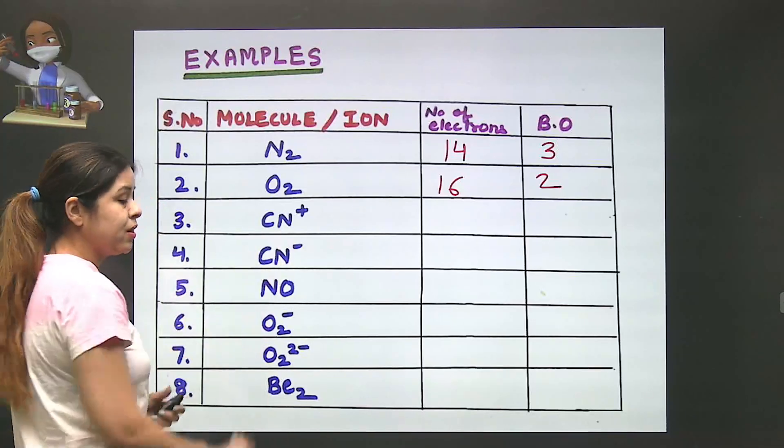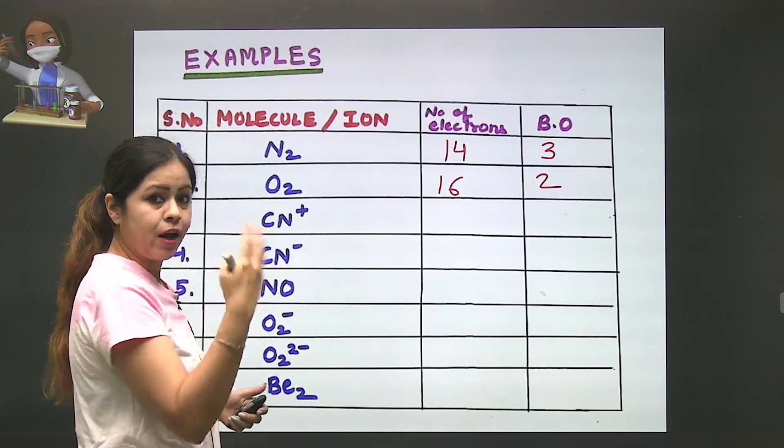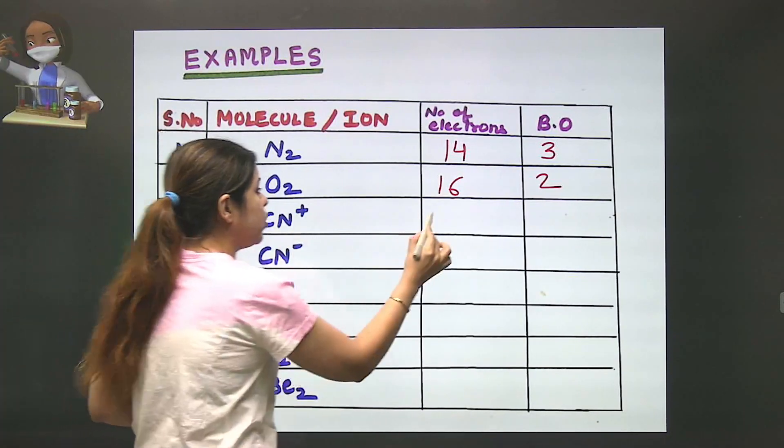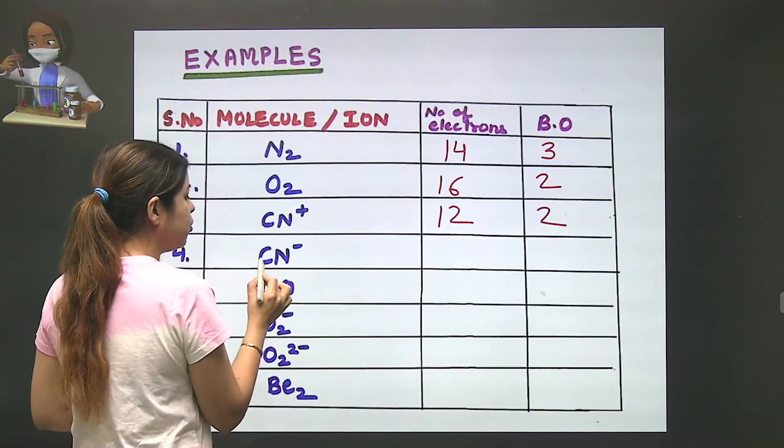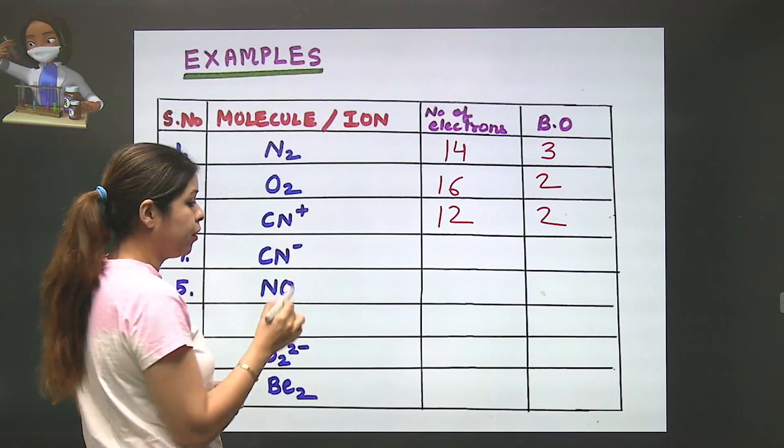Look at CN+. Carbon is 6, nitrogen is 7, but it's positive, so 6 plus 7 minus 1 equals 12 total electrons. For 12, the corresponding bond order is 2.5. For CN-, 6 plus 7 plus 1 equals 13 total electrons, so the bond order is 2.5.